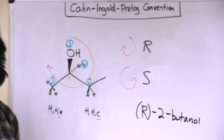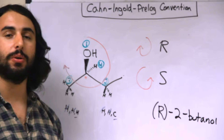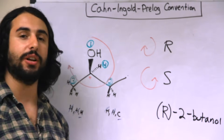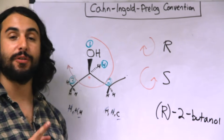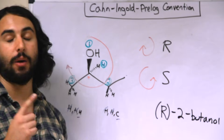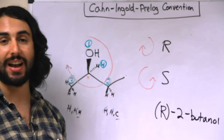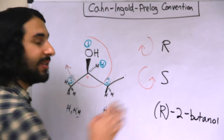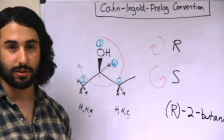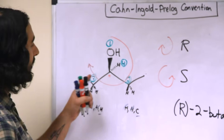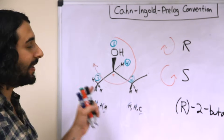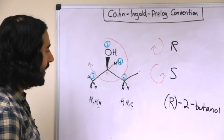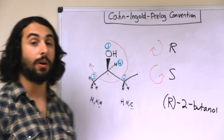We already knew this was 2-butanol based on our knowledge of IUPAC nomenclature; however, now we are able to assign the extended formality of the absolute configuration. It is going to be either R or S, and in this particular case it is R.